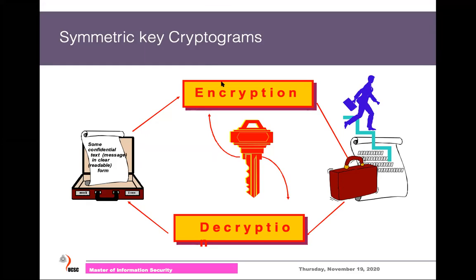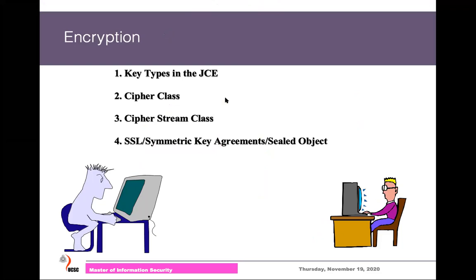In symmetric key encryption, we have data, use a key to encrypt the data, and we use the same key for decryption. When you use such symmetric key encryption, we use two types of cryptographic classes: the Cipher class and the CipherStream class. To generate security keys for these classes, we use the KeyGenerator class. Symmetric key encryption can also be used to handle SSL network communications.